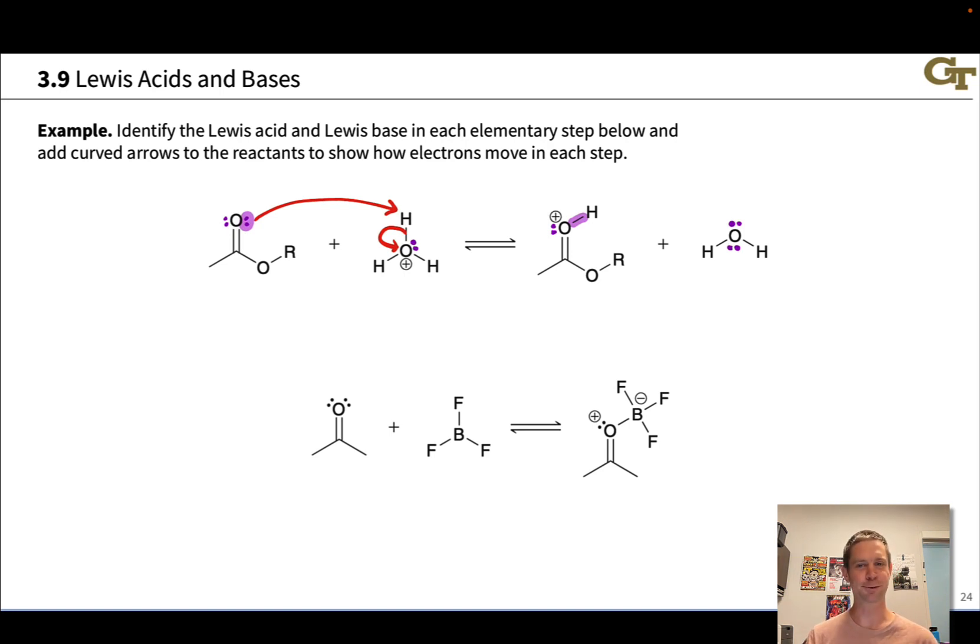Now that we've drawn this out, it becomes apparent this is just a Bronsted acid-base reaction, just a proton transfer process, and as we've seen previously, that's going to make the molecule on the left, the electron pair donor is the Lewis base, and the electron pair acceptor here is the Lewis acid.